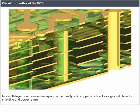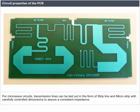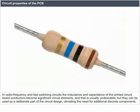Power and ground traces may need to be wider than signal traces. In a multi-layer board, one entire layer may be mostly solid copper which acts as a ground plane for shielding and power return. For microwave circuits, transmission lines can be laid out as strip line and microstrip with carefully controlled dimensions to assure consistent impedance. In radio frequency and fast switching circuits, inductance and capacitance of PCB conductors become significant circuit elements, but can be used as deliberate parts of the circuit design.